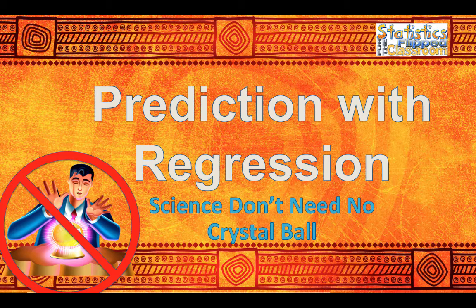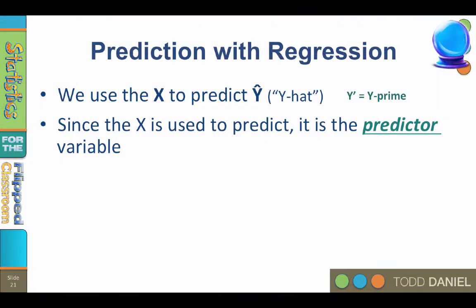Now that we know what the regression equation is, let's learn how to use a regression equation for prediction. Science can do better than a crystal ball. We use the x variable to predict y-hat. By the way, some books use the symbol y', which is exactly the same thing as y-hat, just easier to create on a computer keyboard.